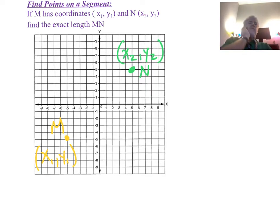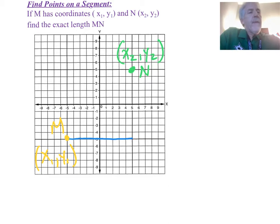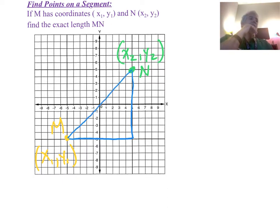If I were to draw in my triangle here — it's a triangle because of the connections — when I draw this in, we have a right triangle.